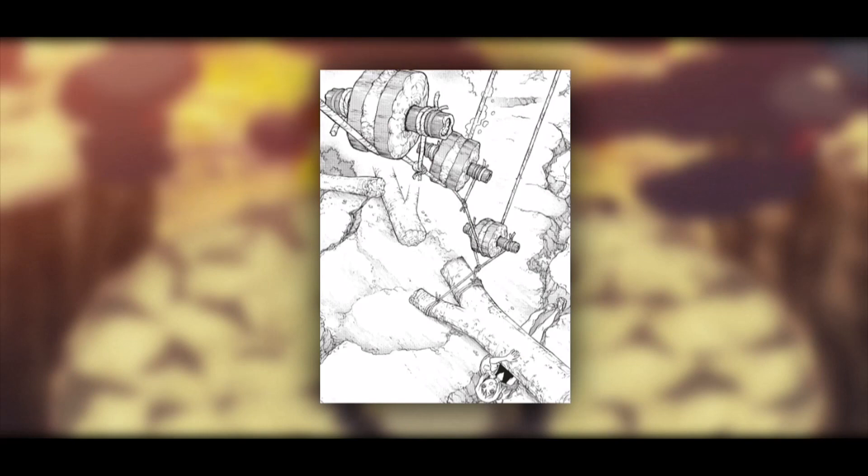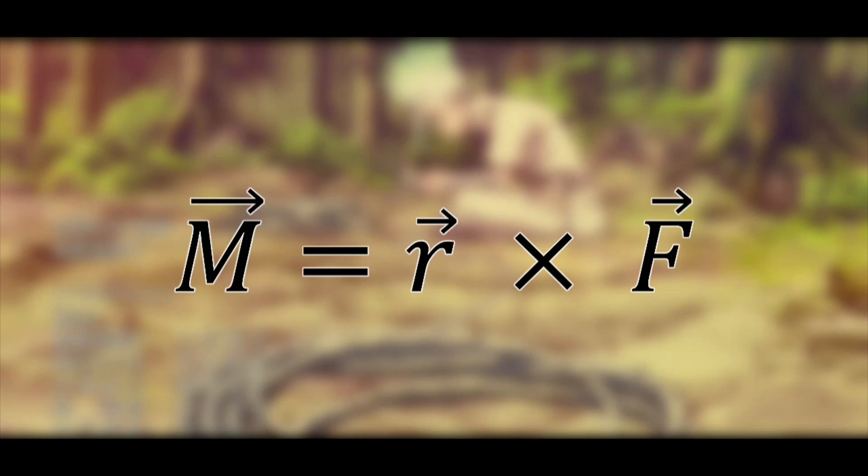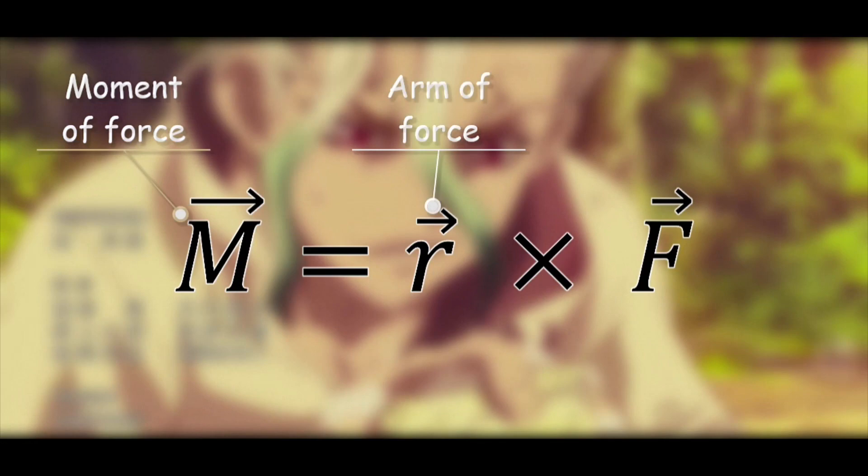The most important thing here is the moment of force or just torque. The formula for torque is M equals r times F, where M is the moment of force, r is the arm of force and F is the force. Instead of M, sometimes the Greek letter tau is used.